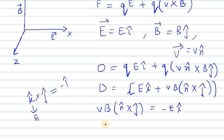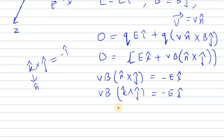So n̂ = k̂, and we have vB(k̂ × ĵ) = -E î, which gives vB(-î) = -E î. The î and minus signs cancel out, leaving vB = E.